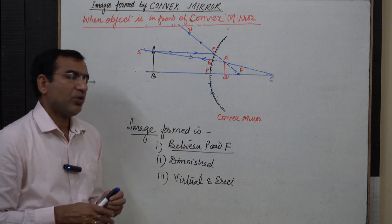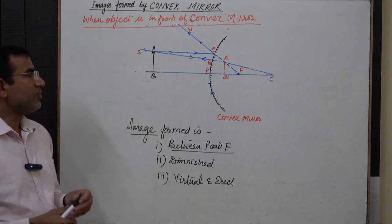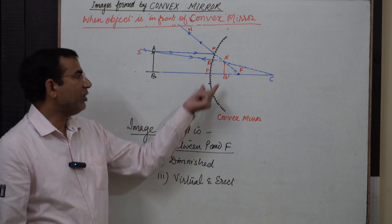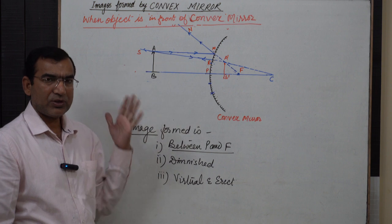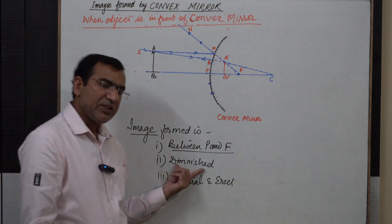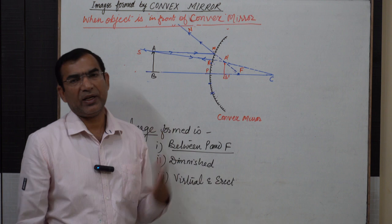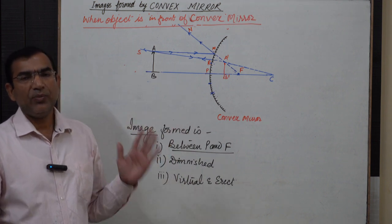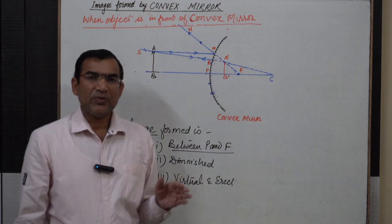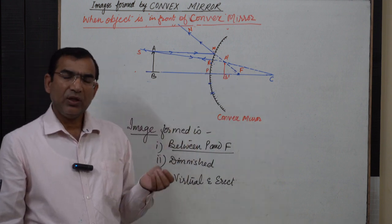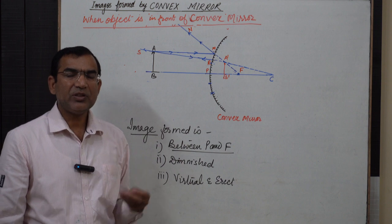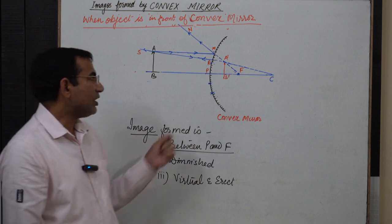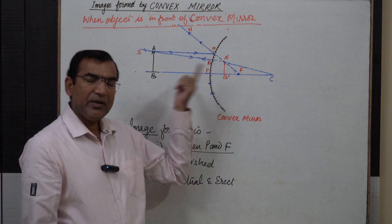When an object is placed anywhere in front of a convex mirror other than infinity, the image will always be formed between pole P and focus F. It will always be diminished, and always virtual and erect. These are the characteristics of the image formed by the convex mirror: virtual, erect, diminished, with position between P and F.